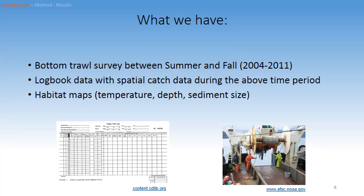We have three large spatial-temporal datasets. The first is a bottom trawl survey between summer and fall, 2004 to 2011. The second dataset is logbook data covering the same time period, which gives us spatially referenced catch data. The final dataset consists of habitat maps of temperature, depth, and sediment size along the U.S. West Coast.